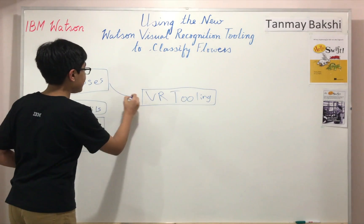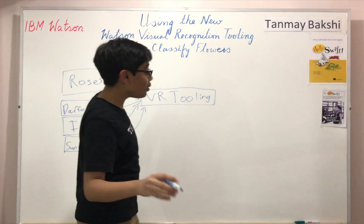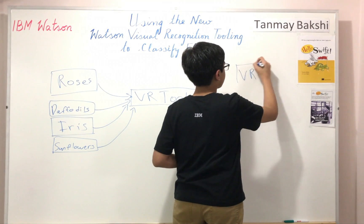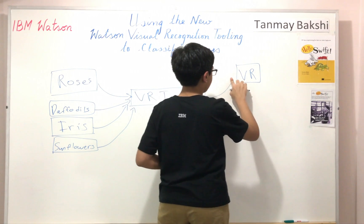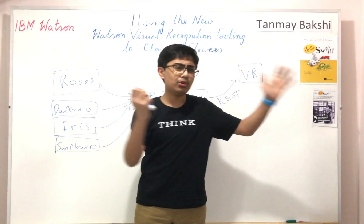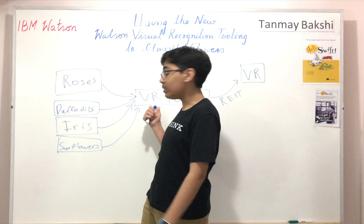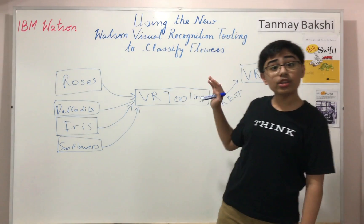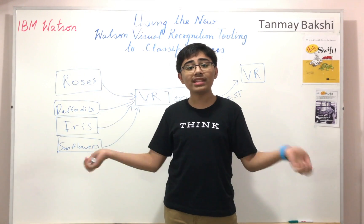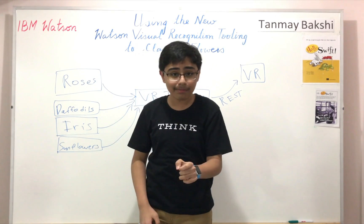Once images are fed into the tooling, it uses the REST API for Visual Recognition to communicate with the Visual Recognition service. This means instead of having to use URL commands, command line utilities, or a language-specific SDK, all you need to do is upload your images to the tooling. Once training is done, you can use that classifier ID with the same API key across all your applications — whether powered by the SDK, REST API, or the tooling itself.